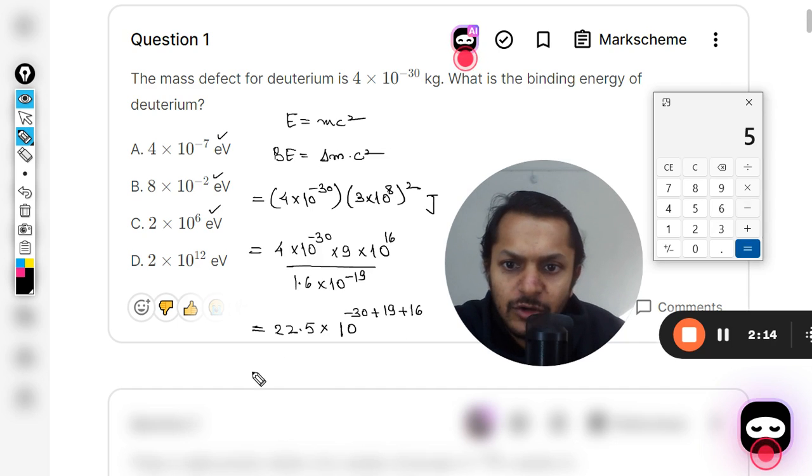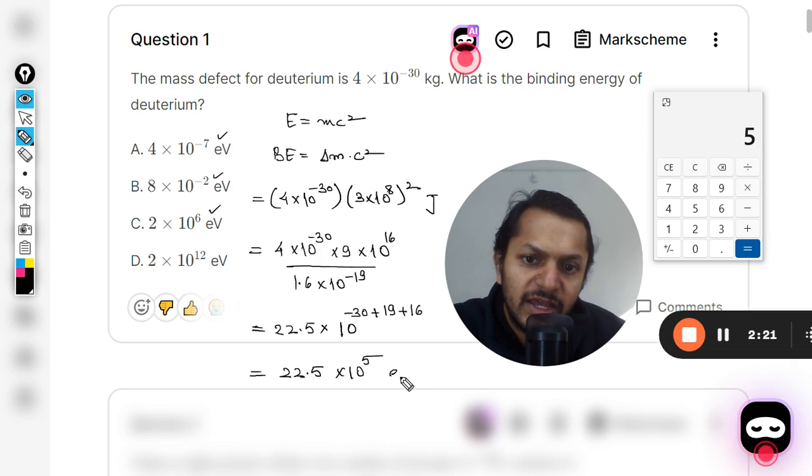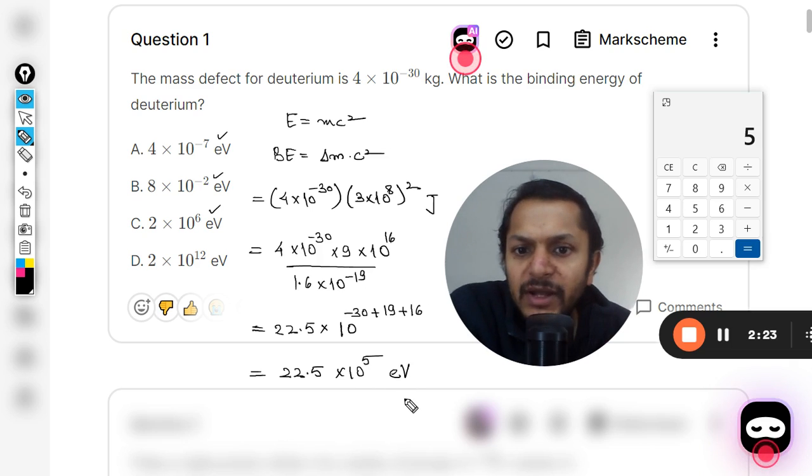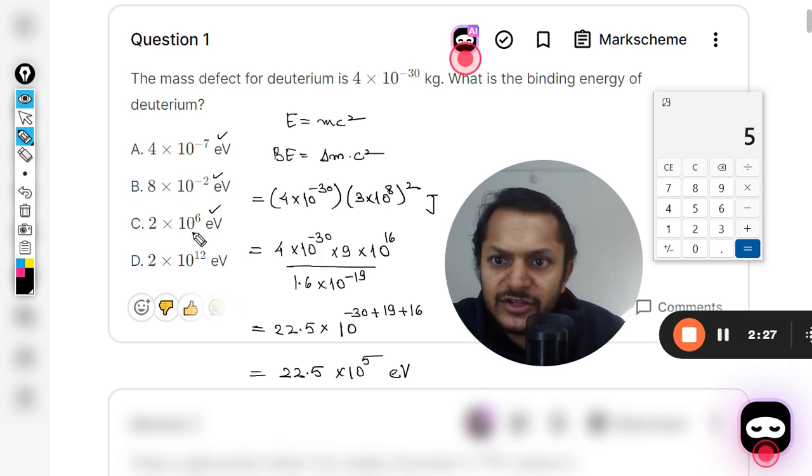So this can be written as 19 + 16 - 30. So it is coming out to be 5. Now, so 22.5 × 10^5 eV. This is the correct answer.